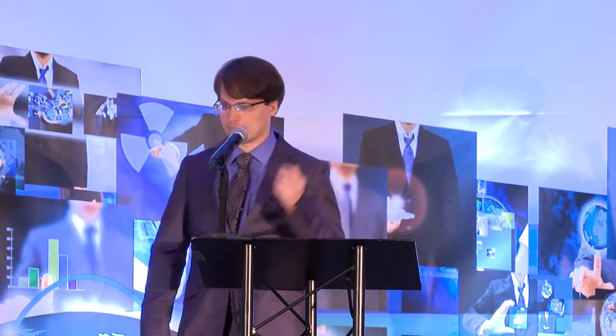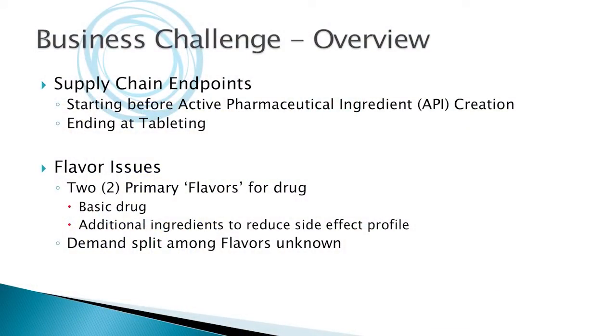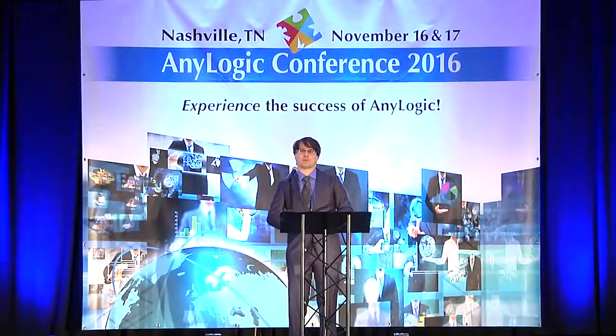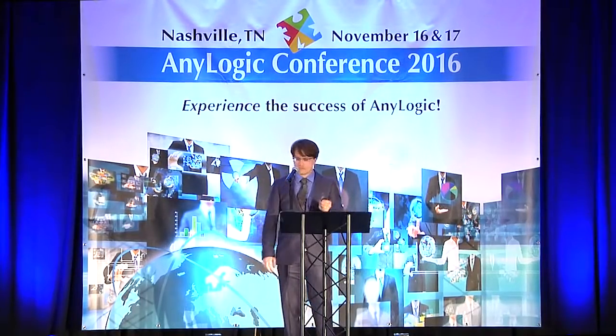What we modeled was from manufacturing of the active pharmaceutical ingredient, or API, of this drug, ending at tabletting where they create individual tablets and ship them to others who sell to customers. There were two primary flavors: the base drug, and one with added agreements that mitigated the side effect profile of the API. They didn't even know the demand split — they thought it might be 80/20 in favor of the second flavor with the minimal side effect profile.